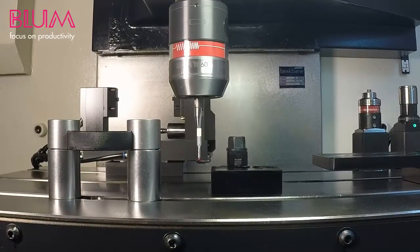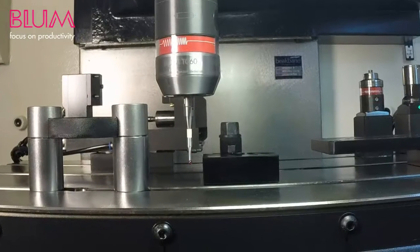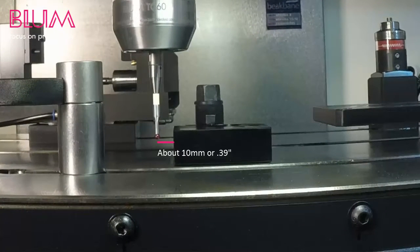To set our workpiece's x-axis zero point, we start by positioning the probe close to the workpiece about 10 millimeters away from its x-axis surface.